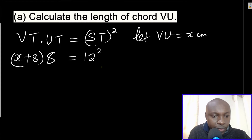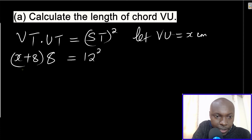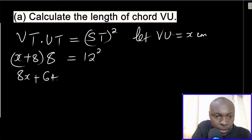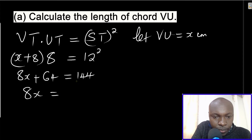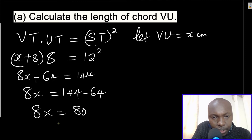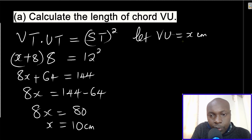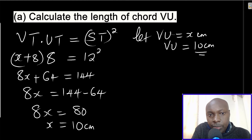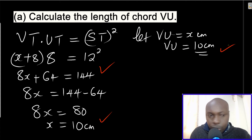Solving the equation: opening the brackets gives 8x plus 64 equals 12 squared, which is 144. So 8x equals 144 minus 64, which gives 8x equals 80. Dividing both sides by 8 gives x equals 10 centimeters. Therefore VU equals 10 centimeters.